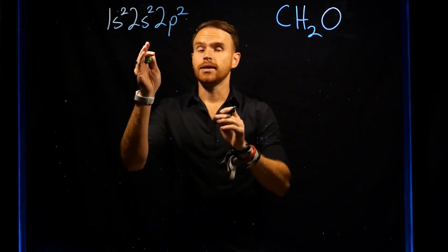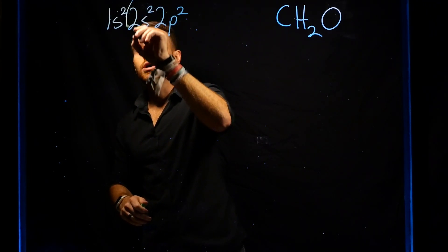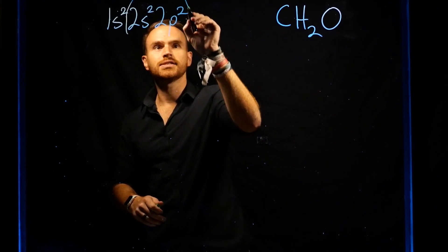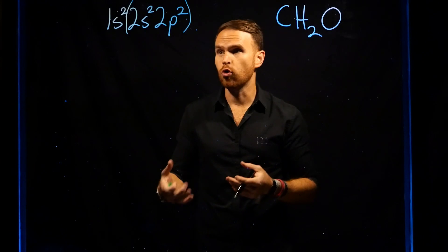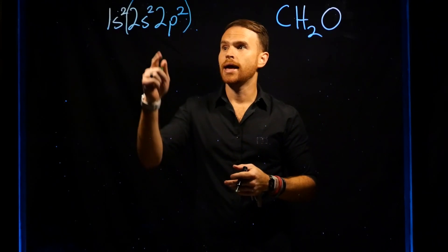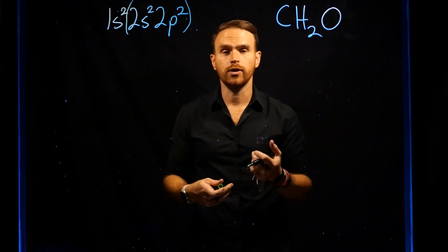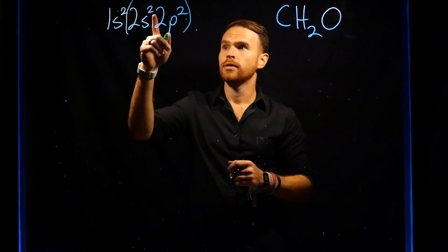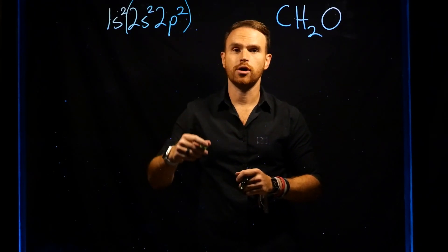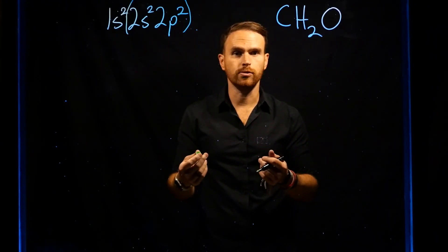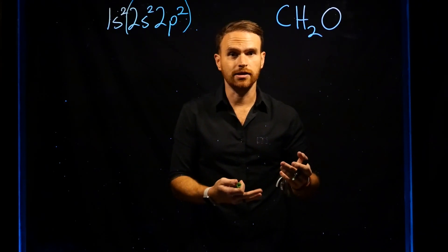The valence electrons are going to be all the electrons in the outermost shell or valence shell of orbitals. As we can see from the superscripts following each of the atomic orbitals, there are two electrons in the s orbitals and two electrons in the p orbitals. This means that carbon has four valence electrons.